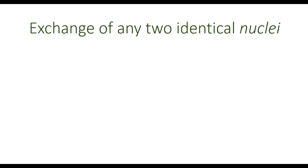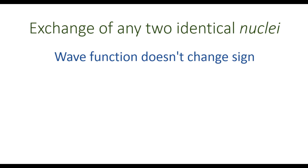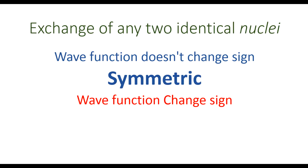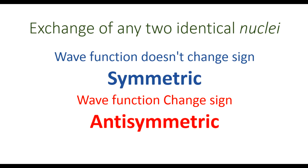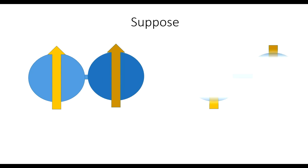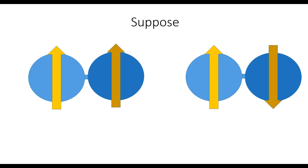First, we need to determine whether the nuclear wave function is symmetric or anti-symmetric. To do that, we exchange the two identical nuclei. If the wave function does not change sign upon exchange, it is symmetric. If the wave function does change sign upon exchange of two identical nuclei, it is anti-symmetric. We can show this using the example of ortho and para hydrogen.